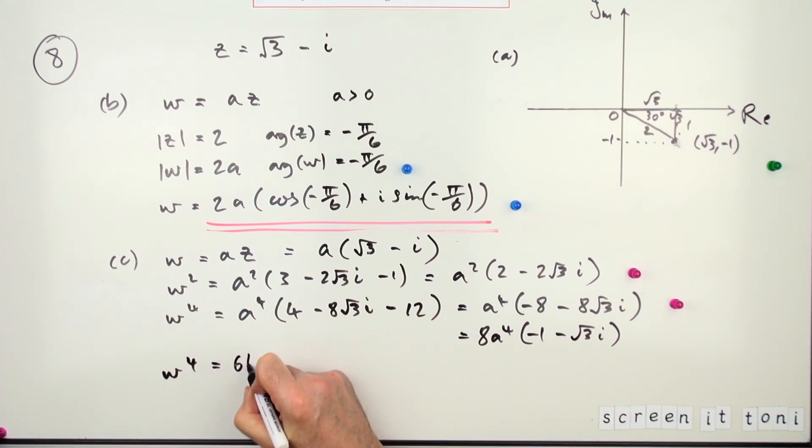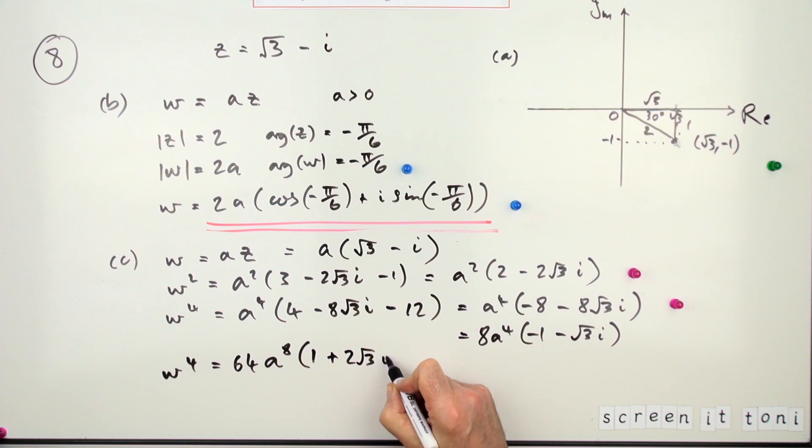Square the first: one. Twice the product will be, plus in this case, plus 2√3·i. The last one will be minus the square of that because of the negative—the i²—so it'll be minus 3. So that gives you −2 + 2... taking the 2 out: 128·a^8·(−1 + √3·i), or if they want it as i√3, they can have it. That'd be the last mark. So obviously you should have done it using de Moivre's.